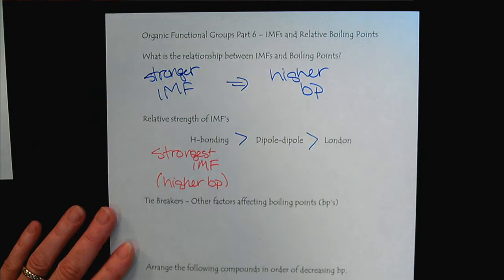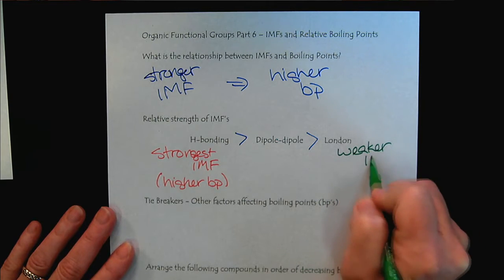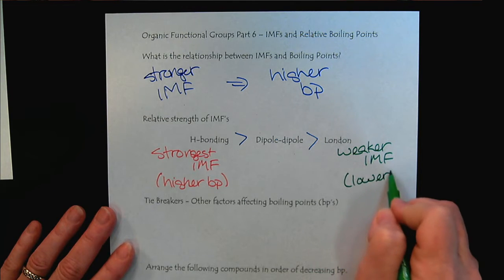And when we're at London, that's the weaker IMF, and so those substances would have the lower boiling point.